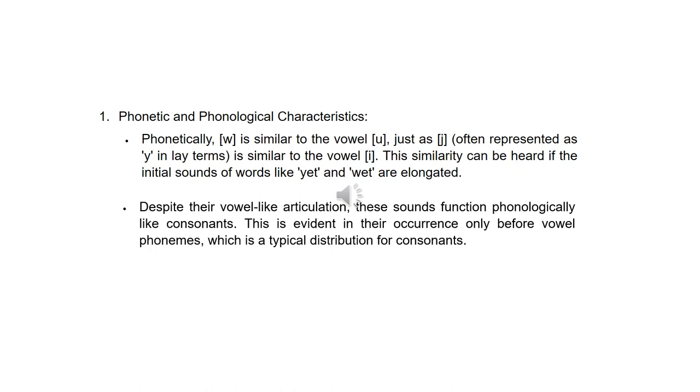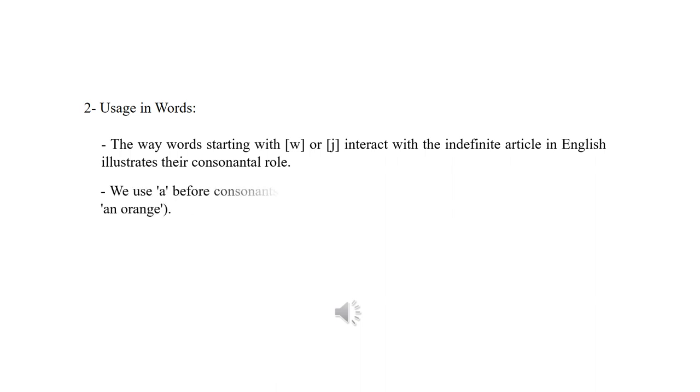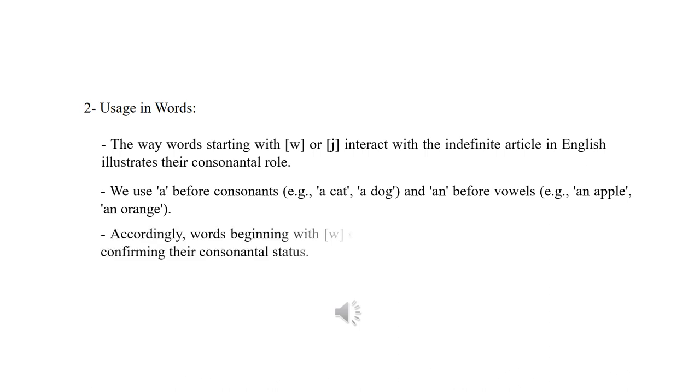The way words starting with w or y interact with the indefinite article in English illustrates their consonantal role. We use a before consonants, e.g., a cat, a dog, and an before vowels, e.g., an apple, an orange. Accordingly, words beginning with w or y are preceded by a, e.g., a way, a year, confirming their consonantal status.